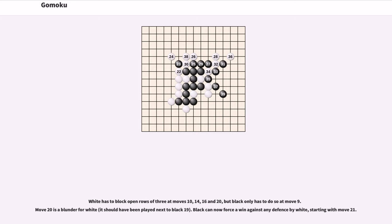White has to block open rows of three at moves 10, 14, 16 and 20, but black only has to do so at move 9. Move 20 is a blunder for white; it should have been played next to black 19. Black can now force a win against any defense by white, starting with move 21.